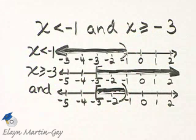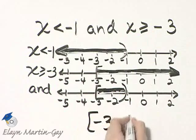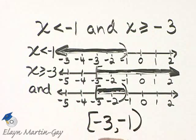So let's write down now what we've shaded. From negative 3 to negative 1 with a parenthesis. There are our solutions.